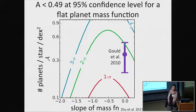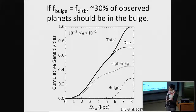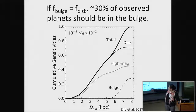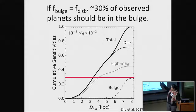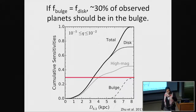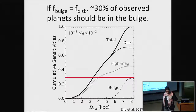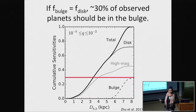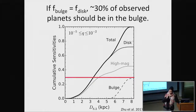We can also look at the cumulative distribution of events and sensitivities as a function of distance. About 30% of objects are from the bulge. If the frequency of planets in the disk equals that in the bulge, you expect one bulge planet for every two disk planets. Any deviation from this two-to-one ratio indicates that the actual distributions differ between environments.